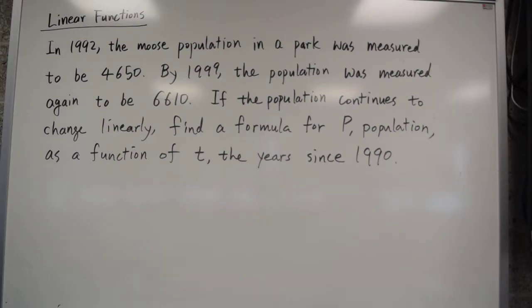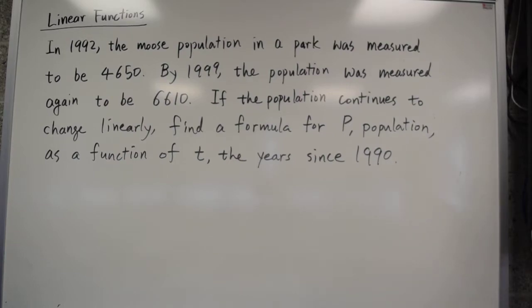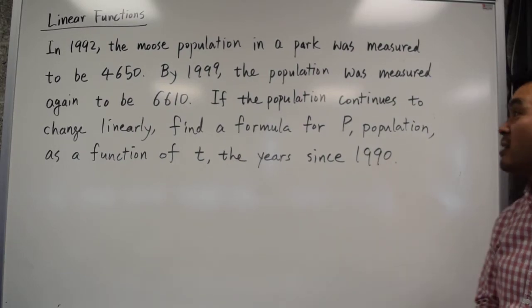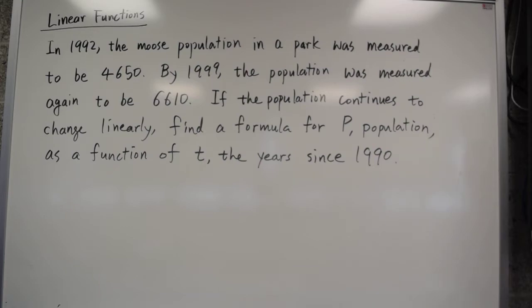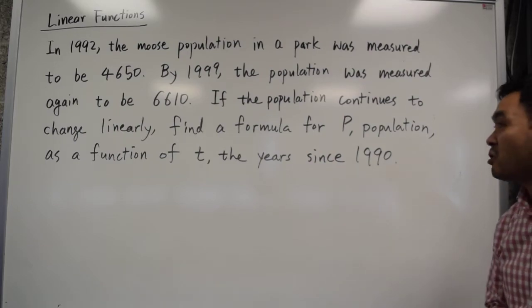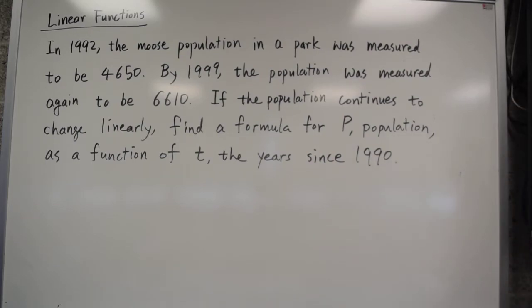In 1992, the moose population in the park was measured to be 4,650. By 1999, the population was measured to be 6,610. If the population continues to change linearly, find the formula for p population as a function of t the year since 1990.